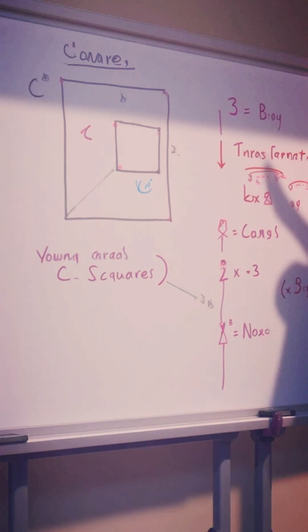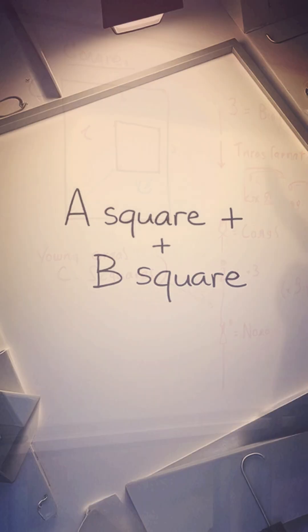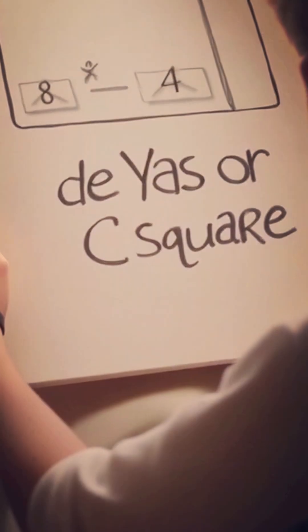Surprisingly, the two smaller areas always add up to the largest. A square plus B square equals C square.